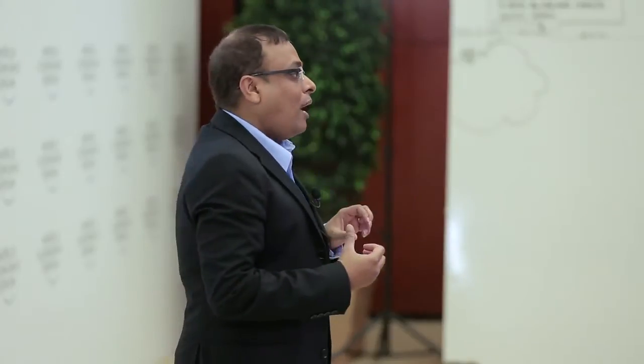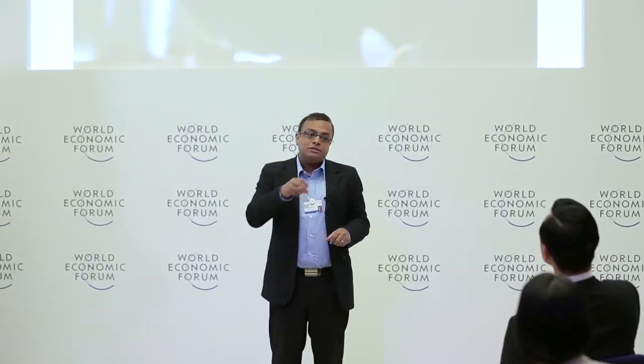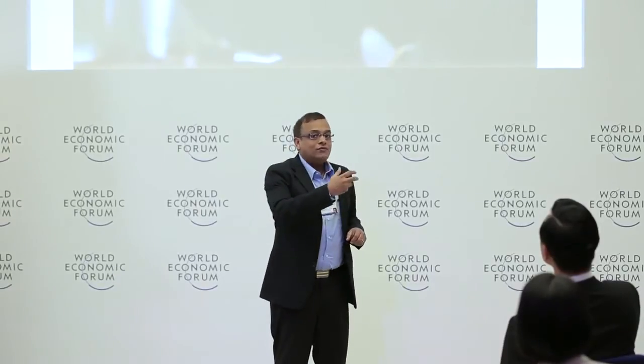One of the things we saw in the past is that much health information is disseminated with images of Caucasians. Community members noted their absence from these images, so they worked on redesigning materials that connected with their stories, their lived experiences, and the experiences they go through in negotiating health. Health information and prevention thus gets grounded in the stories of the community.